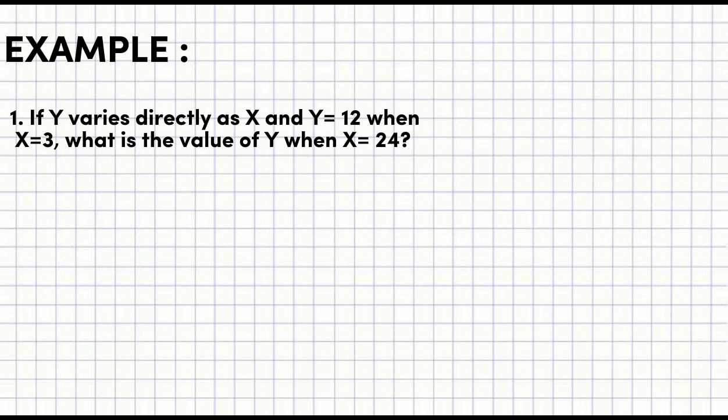So now, we'll find the missing y. To solve for y, the formula remains the same. So it becomes y = 4 times 24. Our answer is y = 96.